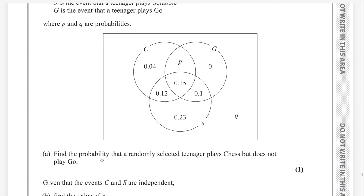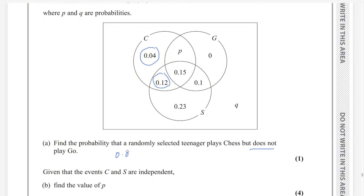First part: find the probability that a randomly selected teenager plays chess but does not play go. You have to take these probabilities. Go is this circle and chess is this one. We will consider these two probabilities only — not these two, because those are for teenagers playing both chess and go together — that is the intersection part. So, who are just playing chess but not go are these two probabilities. Add them: 0.04 plus 0.12. The answer is 0.16.